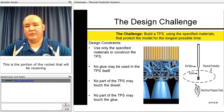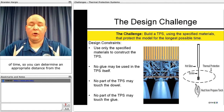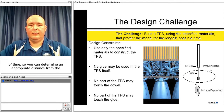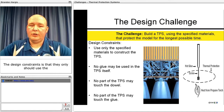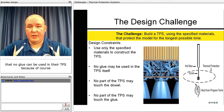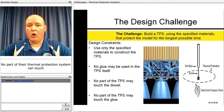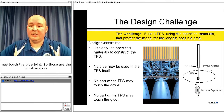This is the portion of the rocket that will receive heat from the flame, and you'll want to test this out ahead of time to determine an appropriate distance from the flame so that you don't have smoking and fire taking place. The design constraints are that students may only use specified materials, no glue can be used in their TPS as it can catch fire, no part of their TPS can touch the dowel, and no part may touch the glue joint.